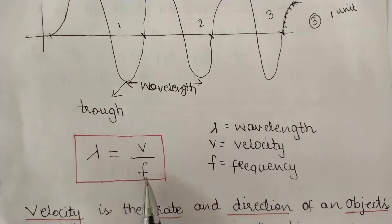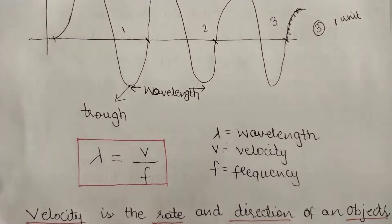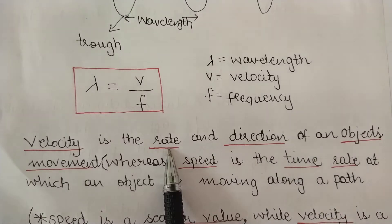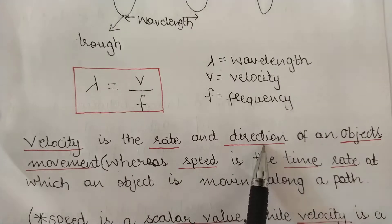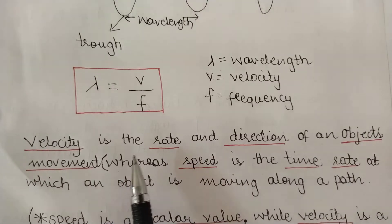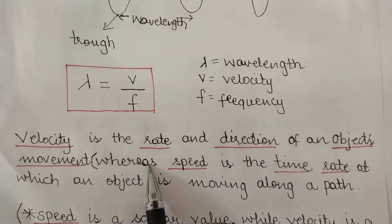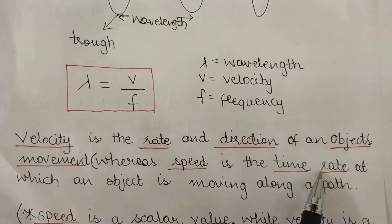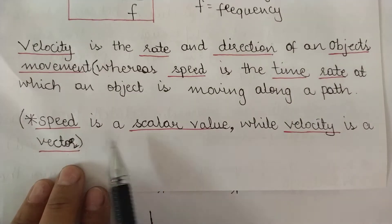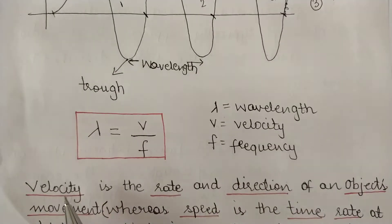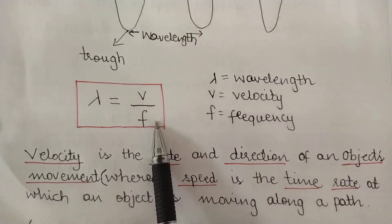The formula to calculate wavelength is: wavelength equals velocity divided by frequency. Velocity is the rate and direction of an object's movement — it is a vector quantity. Speed, on the other hand, is the rate at which an object moves along a path without direction, making it a scalar value. So wavelength equals velocity divided by frequency.